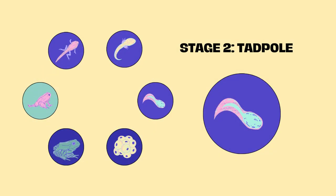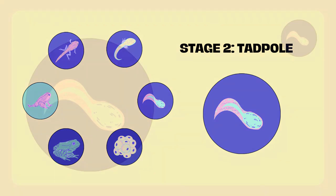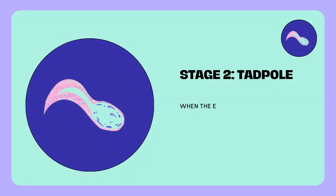Stage 2: Tadpole. When the eggs hatch, tadpoles emerge. These are the larvae of the frog.